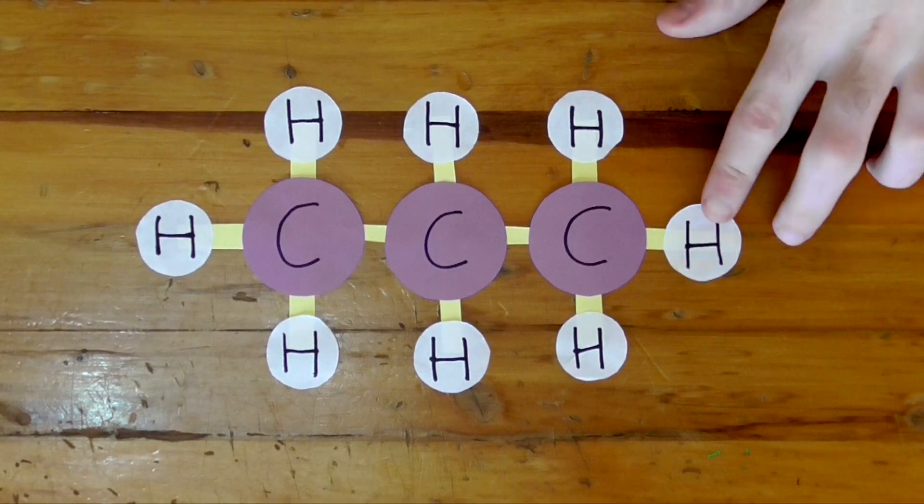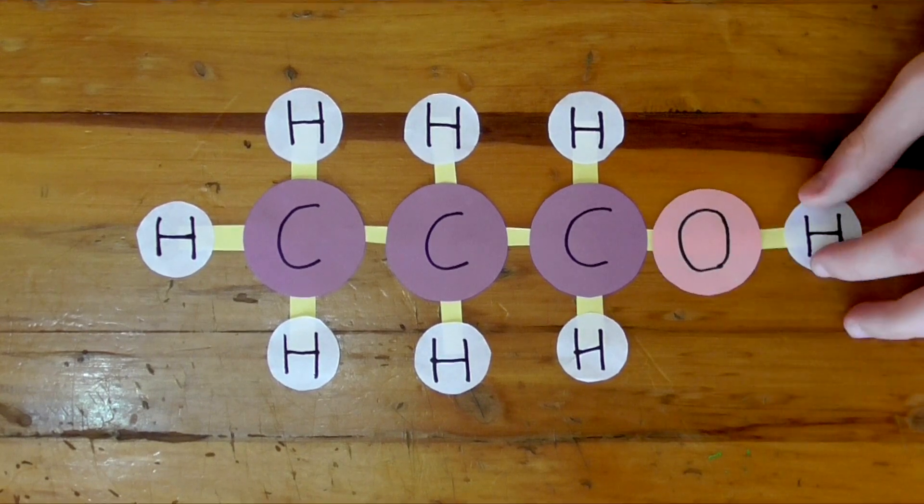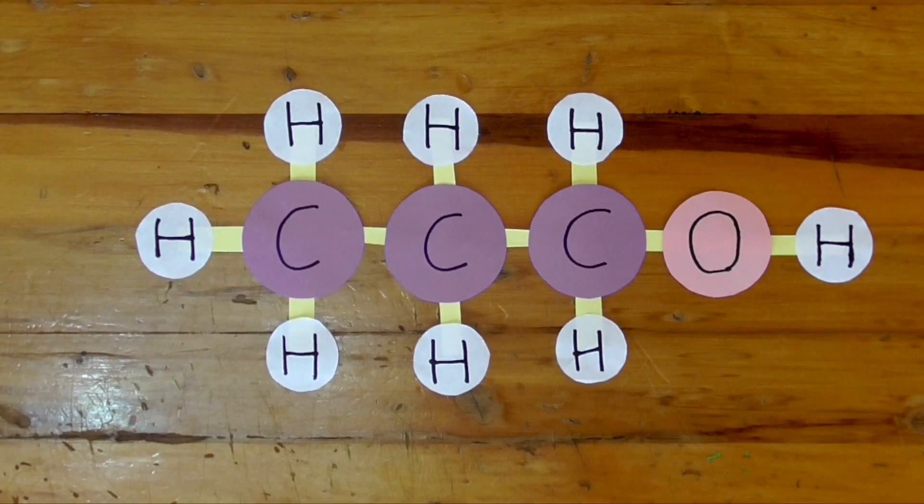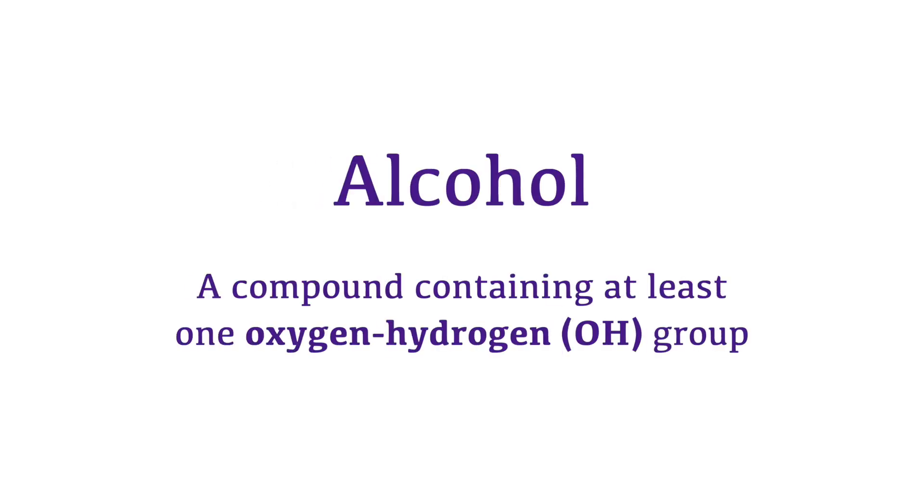An alcohol is an organic compound in which a hydrogen atom has been amputated and replaced with a prosthesis that looks like this. It's one oxygen and one hydrogen atom that share two electrons with each other. The oxygen is covalently bonded to the hydrogen and to the chain of carbon atoms. This is what you need to produce an alcohol.